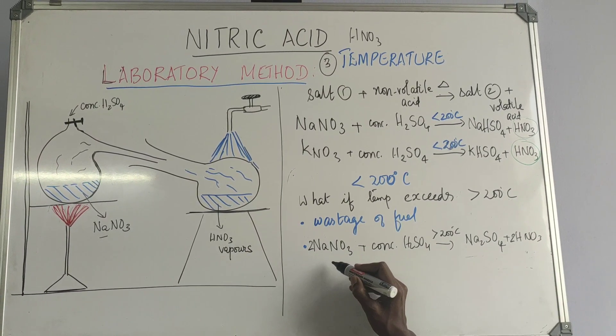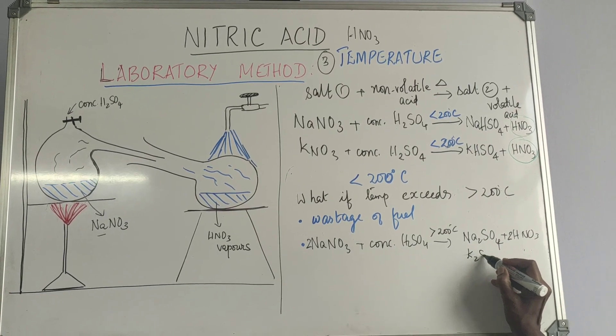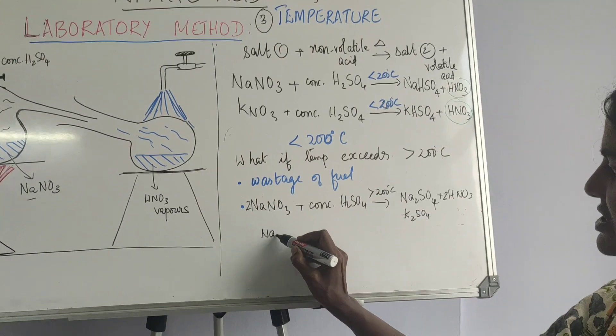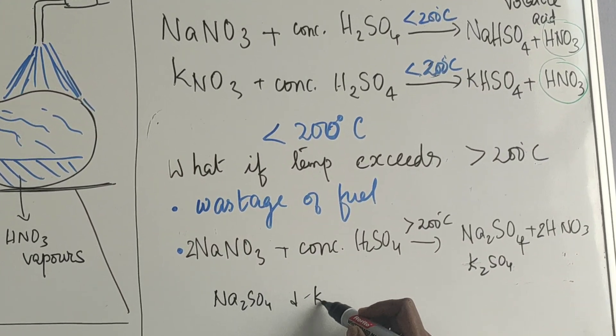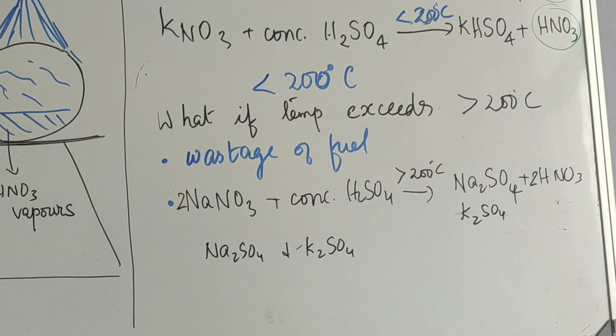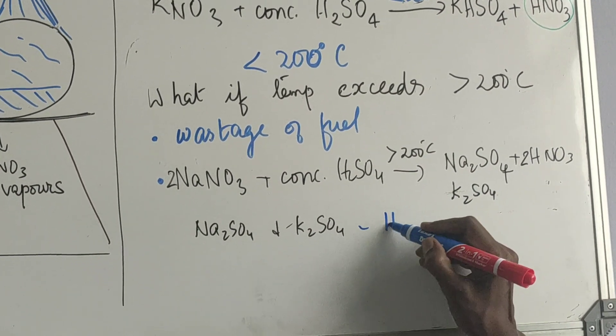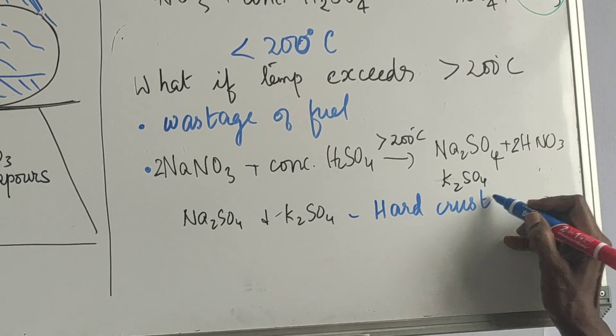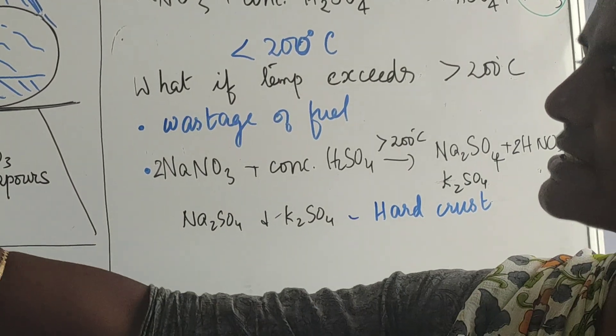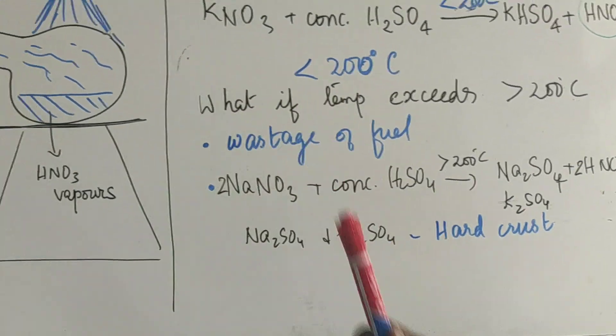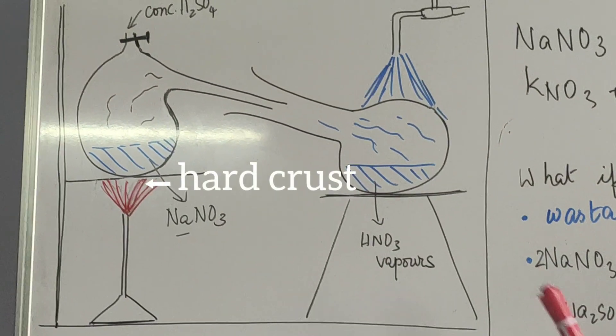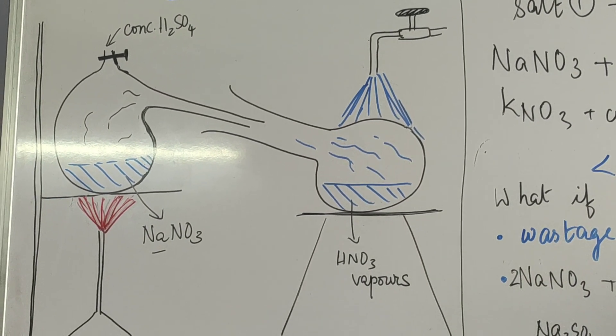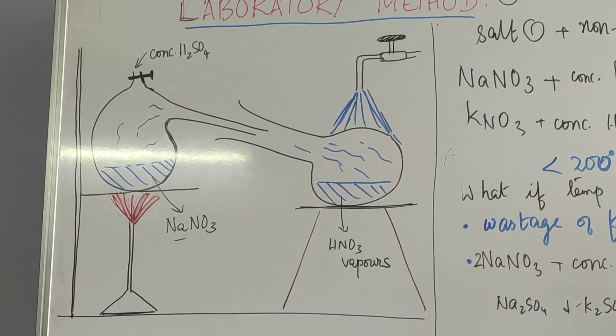Same thing happens with potassium. You will get potassium sulphate. Now these two, sodium sulphate and potassium sulphate, they form a hard crust which is difficult to remove. So at this point, there is a hard crust that is formed when the temperature increases above 200 degrees. And that prevents the reaction from going to completion. That's the second one.